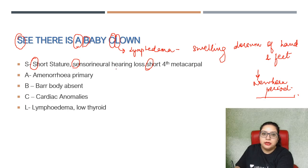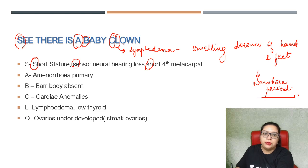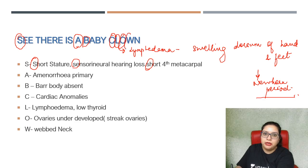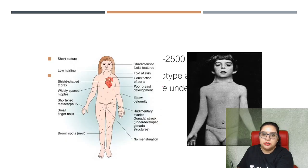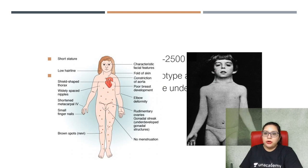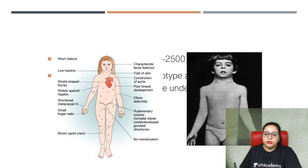The letter O stands for ovaries — they have streaky, underdeveloped ovaries. W stands for webbed neck. N stands for nipples — they have a shield-shaped chest with widely spaced nipples. From the clinical image, this child shows a low hairline with webbing of the neck, a shield-shaped flat chest with widely spaced nipples, a high carrying angle, rudimentary or streaky ovaries, primary infertility, shortened metacarpal bones, small fingernails, low hairline, and short stature.